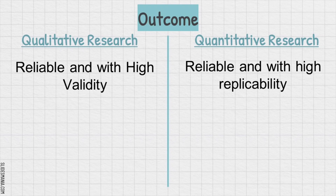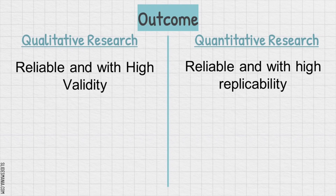Therefore, qualitative research excels in validity because it involves personalized and context-sensitive data collection. The researcher's active involvement helps to interpret data in a way that captures the true essence of the participants' experiences, leading to a deeper, more valid understanding of the subject being studied. Quantitative research, on the other hand, is more about standardization, replication, and generalization. It can be easily replicated in different settings or with different variables, allowing researchers to test hypotheses in multiple contexts and confirm the reliability of the findings.